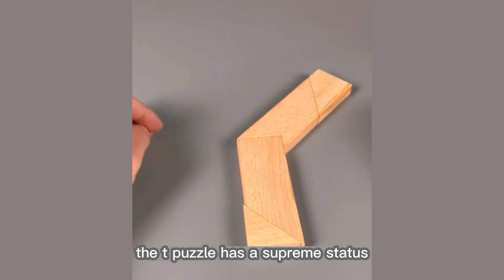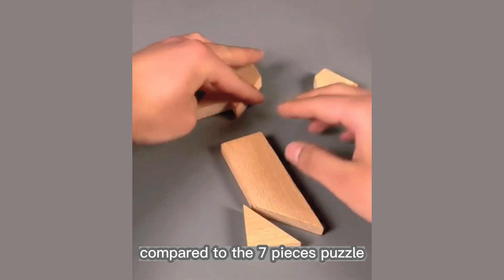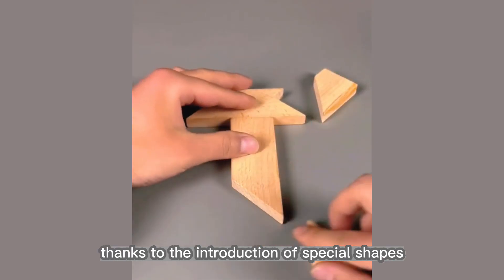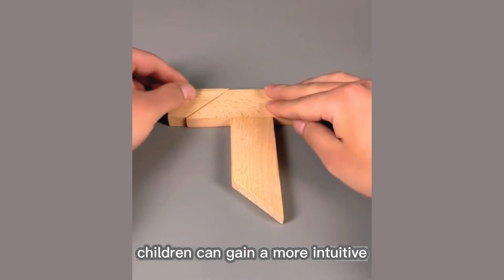In the flat puzzle series, the T-puzzle has a supreme status compared to the seven-pieces puzzle, thanks to the introduction of special shapes that make it more difficult.